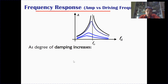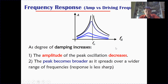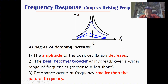Damping affects the frequency response graph. As the degree of damping increases, firstly the amplitude of the peak oscillation decreases — the peak gets lower and lower. The peak also becomes broader, spreading over a wider range of frequency, making the response less sharp. Also note that the resonance frequency at which maximum amplitude occurs shifts to a value smaller than the natural frequency F0.